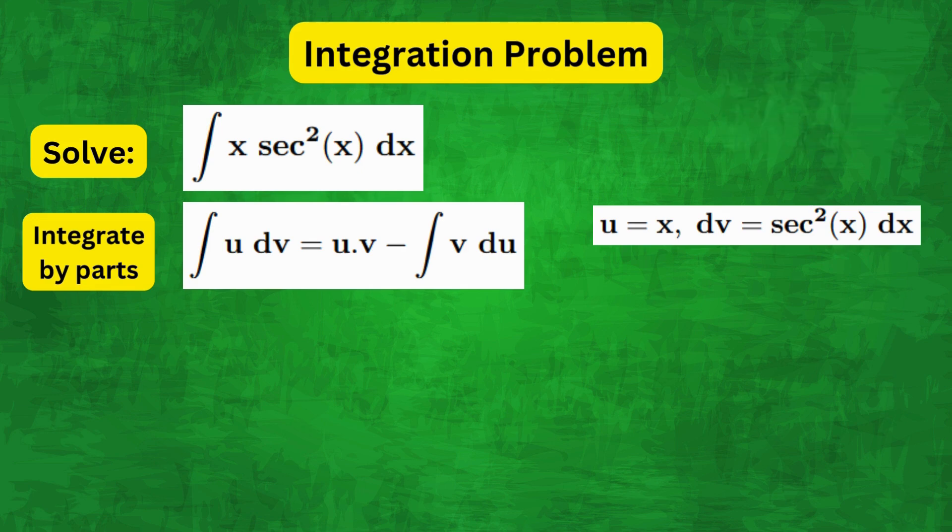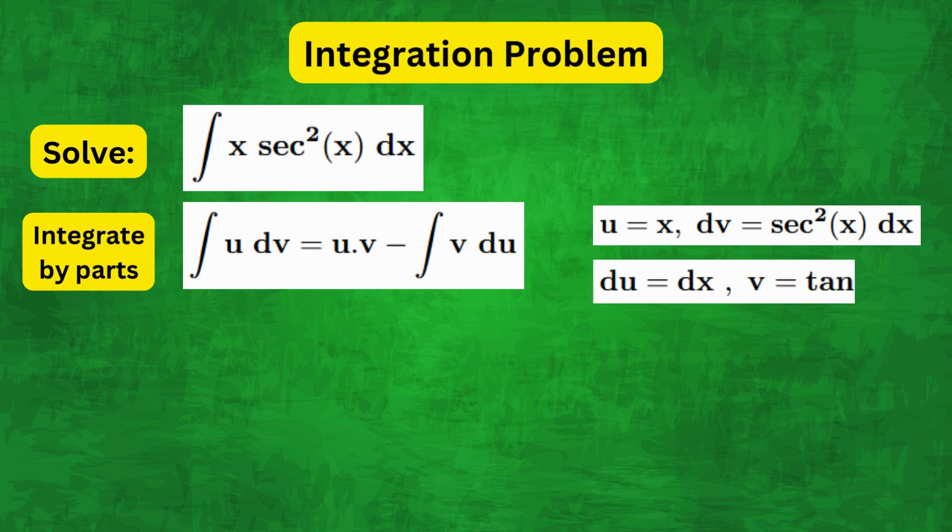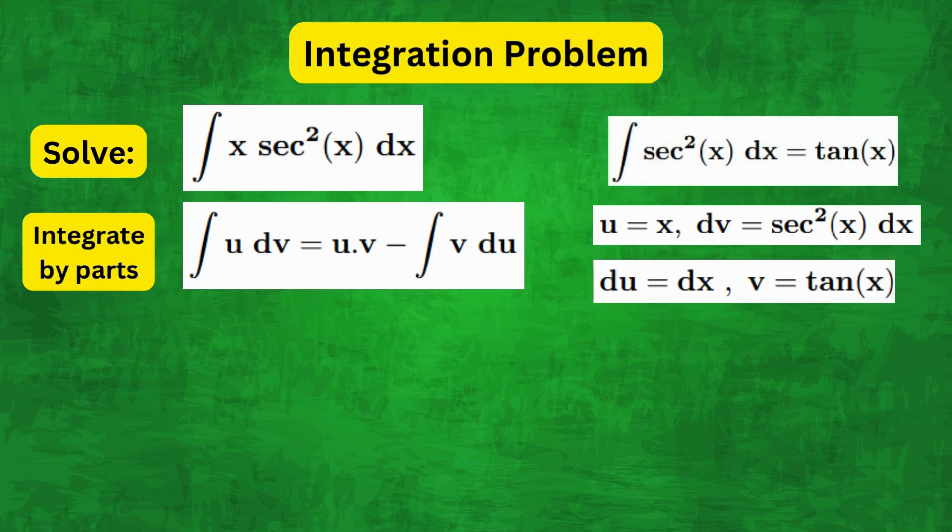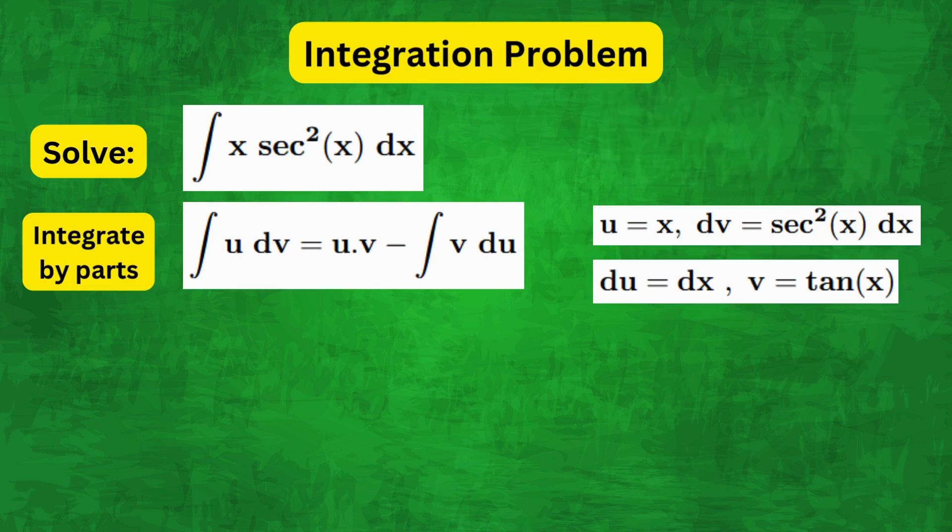So we want to compute v and du. For du we differentiate u = x and we get du = dx. And we integrate dv = sec²(x) dx. And we know that the integral of sec² is tan. So v = tan(x).